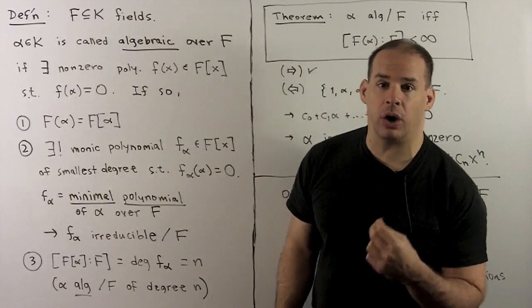With the theorem, we can characterize all elements that are not algebraic — these are what we call transcendental over F. Alpha is transcendental over F if alpha is not the root of any non-zero polynomial with coefficients in F; or, if the degree of the subfield generated by alpha and F over F is infinite; or, the subfield generated by alpha and F inside K is isomorphic to the rational functions over F.